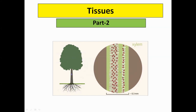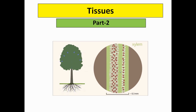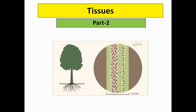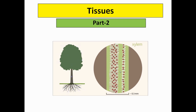Good morning students. We are going to continue chapter 6 of NCERT, that is tissues. We have already done the definition of tissues and started with plant tissues, in which we covered meristematic tissues. Now it's time to learn about permanent tissues. So let's begin.